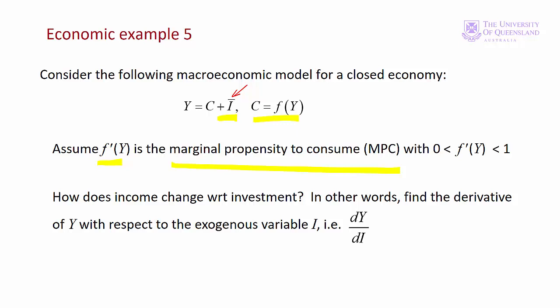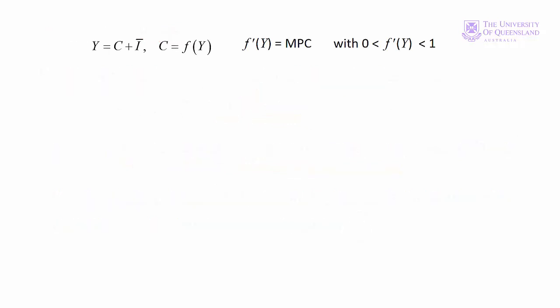Now we've set up the model. We want to determine how Y, total income, changes with I, investment. In other words, we want to find dY/dI. We use implicit differentiation because we have C as a function of Y as a term in the equation. Our basic model is Y equals C plus I, but we also know that C is a function of Y. Let's incorporate those into one equation.